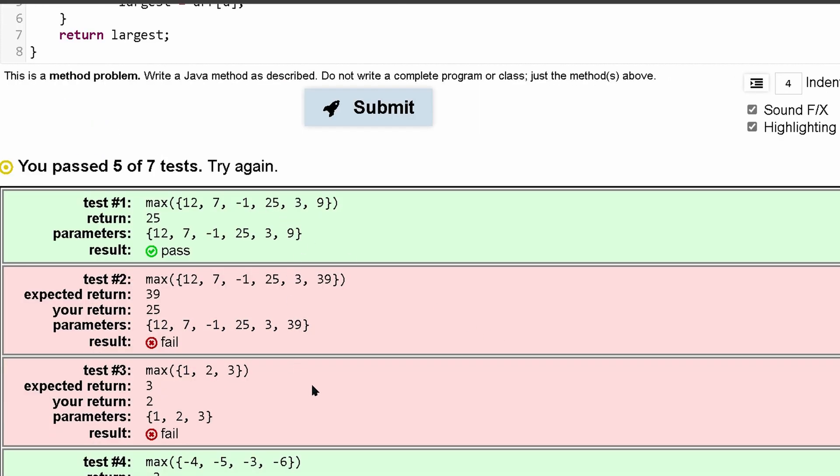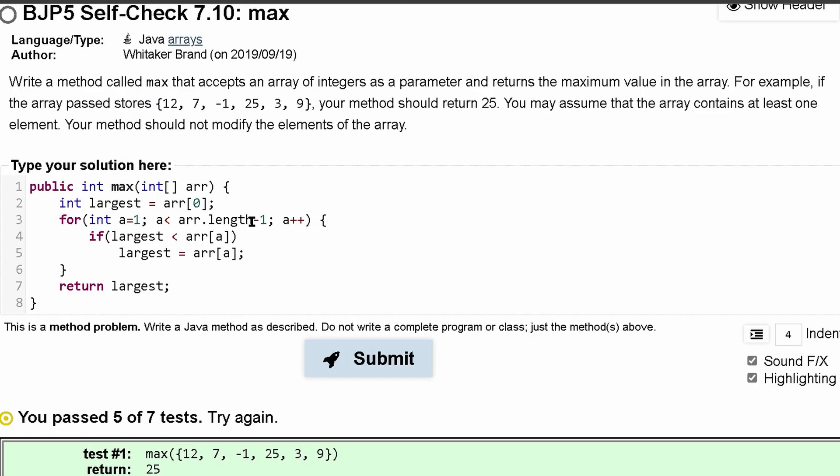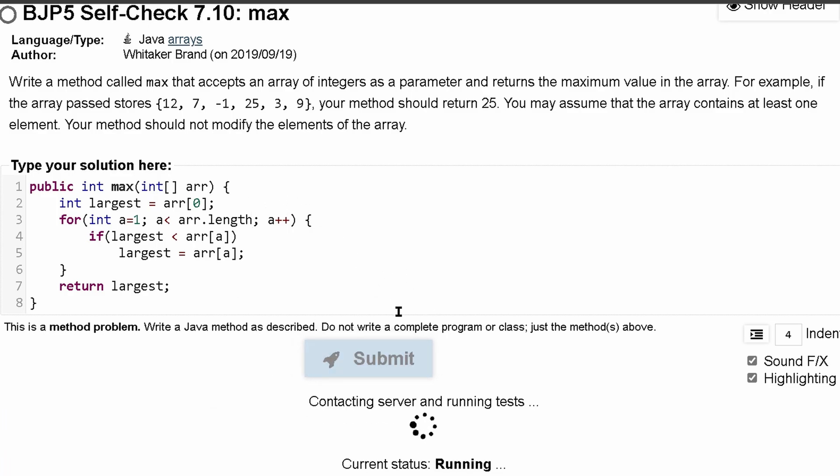And we passed 5 out of 7 tests, so not all the tests. Expected return is 39, and we returned 25 here. So it looks like I might have a problem with the arr.length minus 1 since it starts at 1. We might not have to do the minus 1 part. So let's submit it again and try that out.